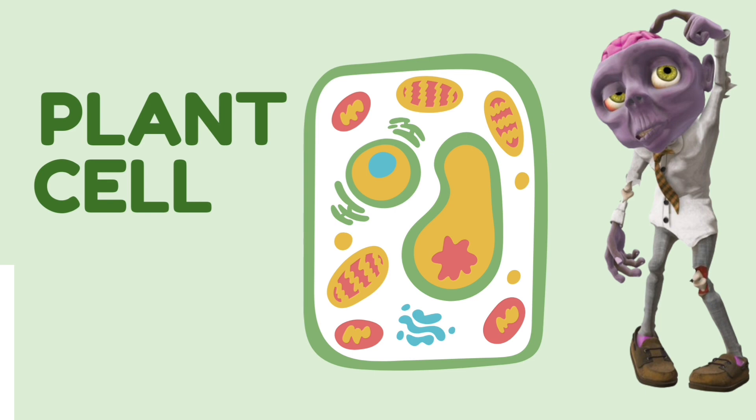To summarize, the organelles we covered are the cell wall, cell membrane, cytoplasm, nucleus, nucleolus, nuclear membrane, ribosomes, smooth and rough endoplasmic reticulum, and Golgi apparatus. Always take note that the amyloplast is only found in plant cells, where it produces, breaks down, and stores starches.